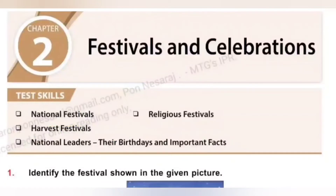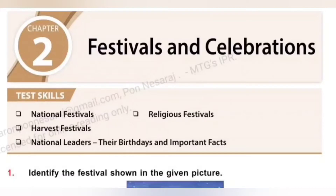In this video, we are going to see SOF ISSO — that is International Social Science Olympiad, Class 3 Chapter 2: Festivals and Celebrations. The skills covered in this chapter are National Festivals, Harvest Festivals, Religious Festivals, National Leaders, their birthdays and important facts.